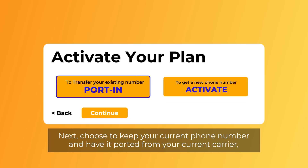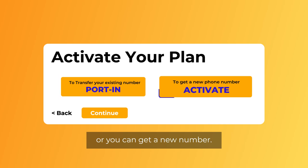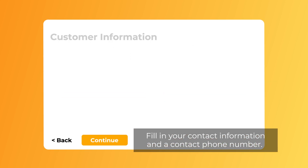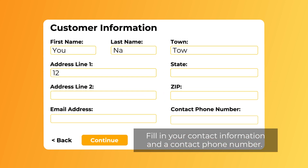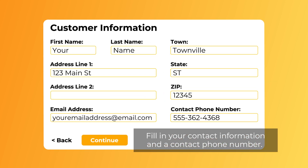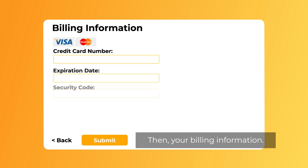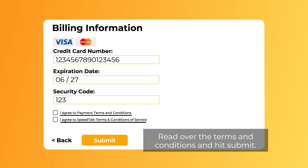Next, choose to keep your current phone number and have it ported from your current carrier, or you can get a new number. Fill in your contact information and a contact phone number, then your billing information. Read over the terms and conditions and hit Submit.